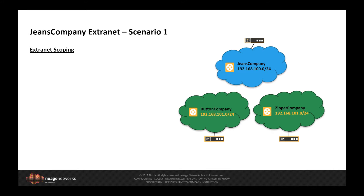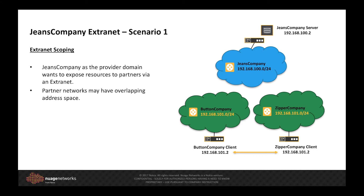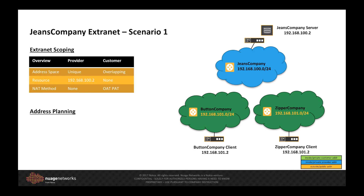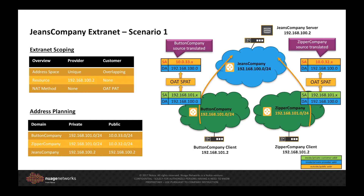In our first Extranet scenario, suppliers of the Jeans company — that is, the button and zipper company — need connectivity to the Jeans company network. The Jeans company has validated its IP address space and is sure there is no conflict between it and its suppliers. However, it has no control over the supplier networks, and it is possible that the button and zipper companies will overlap. The Jeans company also does not want to import and advertise any foreign routes in its network. It's a one-way traffic requirement — the Jeans company does not require any access to the zipper or button company's networks. To support this, we will implement port address translation, and we will need to define and allocate address ranges presented to the provider domain as the translated source address for each customer domain. Button company will be translated to 10.0.33.0 and zipper company to 10.0.32.0.